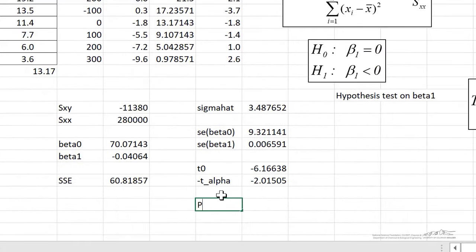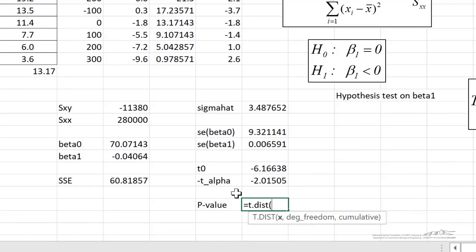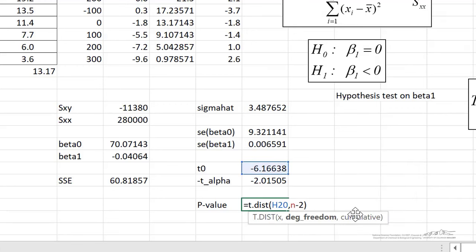Let's calculate the p-value. The p-value remember is the area in the tail to the left for a lower tail test of our test statistic with n minus 2 degrees of freedom. And we have to use cumulative and we get a p-value of about 0.0008.